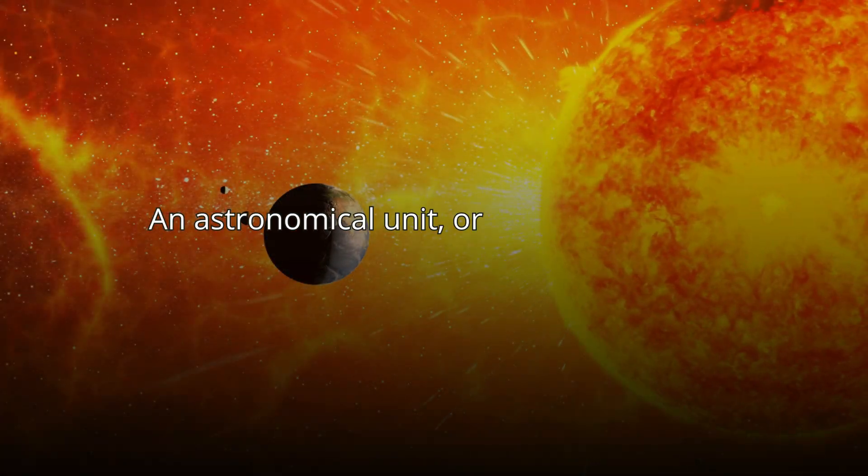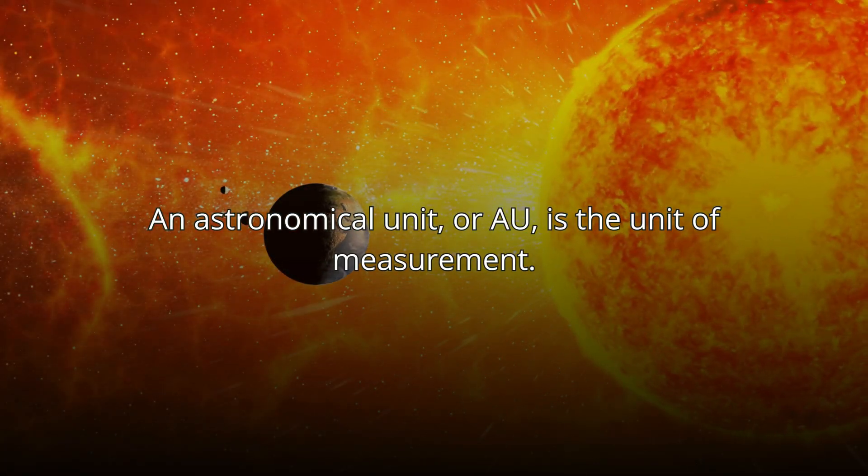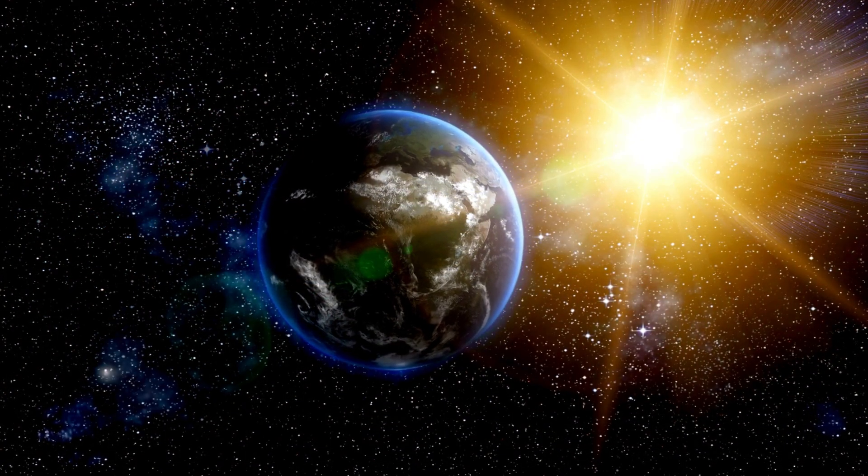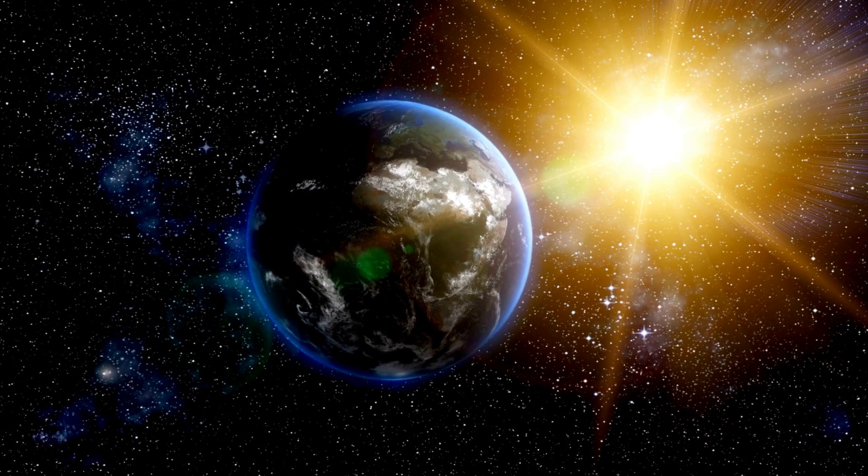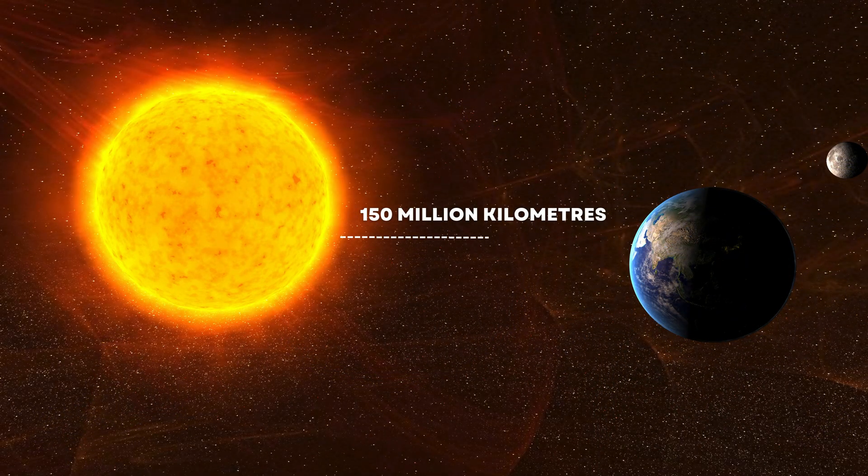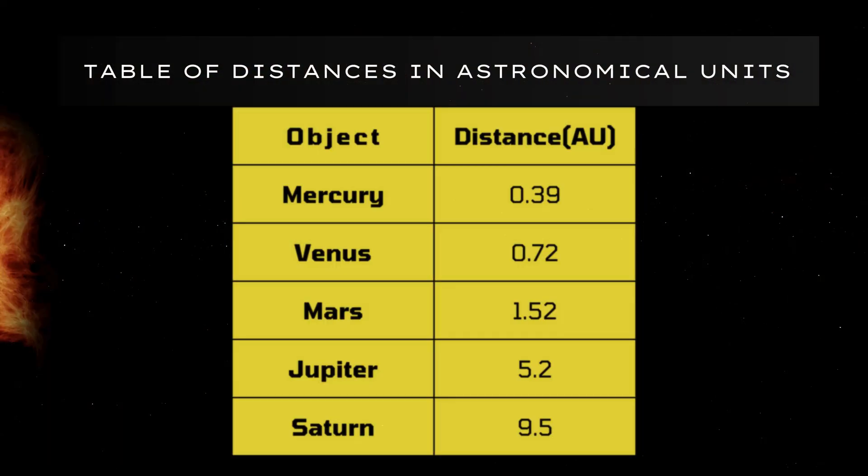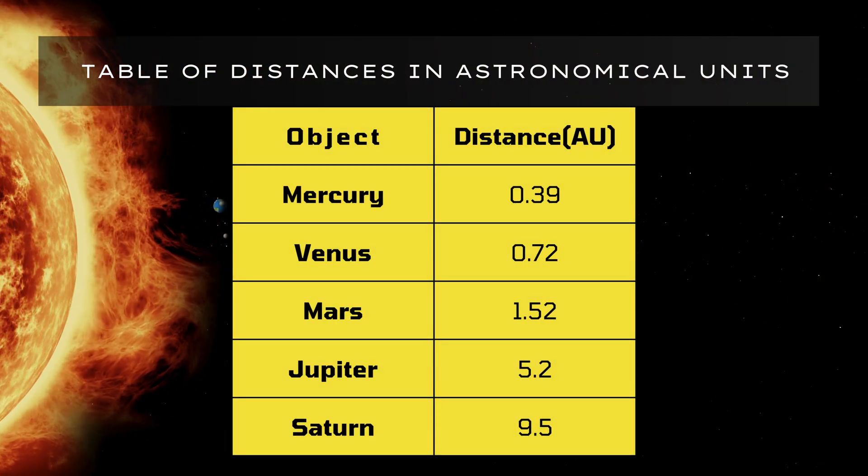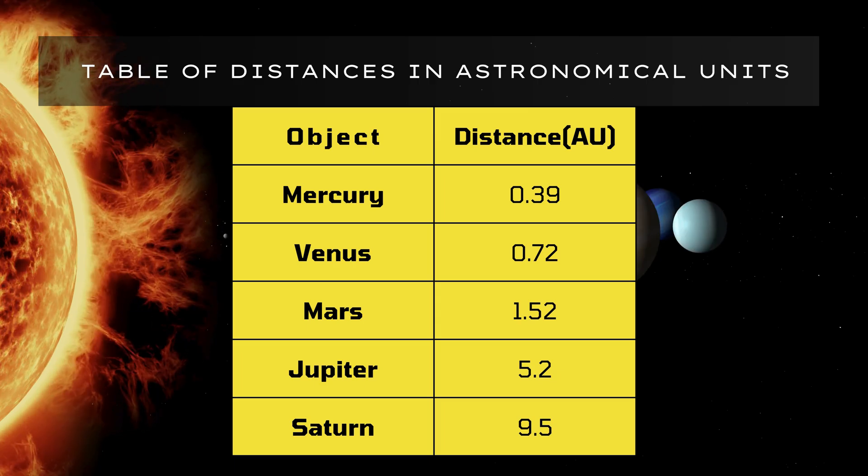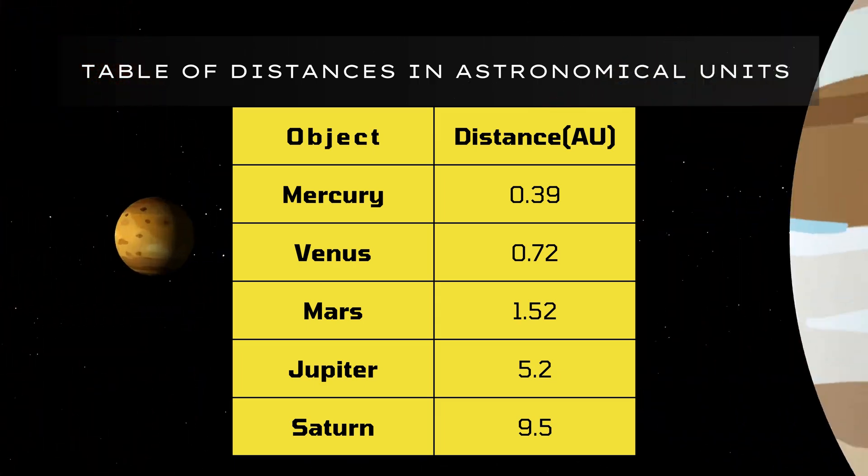An astronomical unit, or AU, is the unit of measurement used to describe the distance between Earth and the sun, which is approximately 150 million kilometers or 93 million miles. It is a very convenient unit for estimating the distances between the celestial bodies within our solar system.